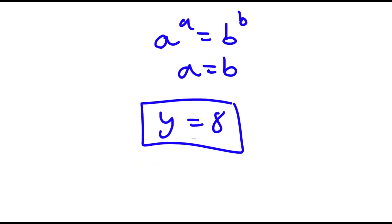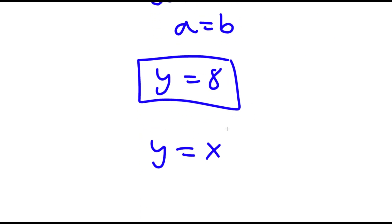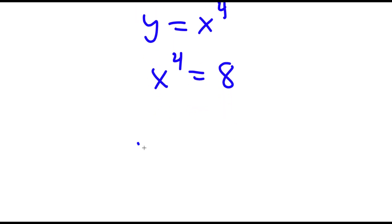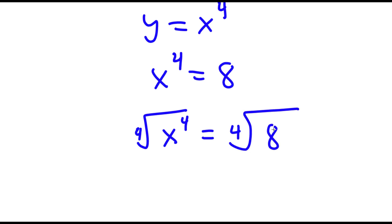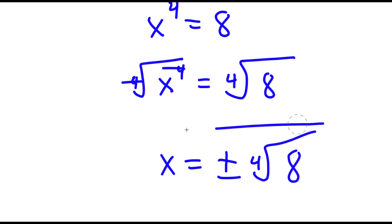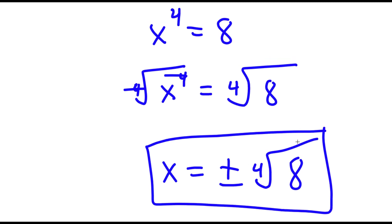Now remember we set y equal to x to the power of 4. So now that we know y is equal to 8, I have x to the power of 4 is equal to 8. To solve this, I'm going to take the 4th root on both sides. These two cancel out and I'm left with x is equal to positive or negative the 4th root of 8. That is my answer.